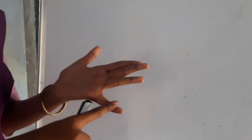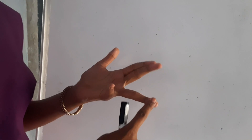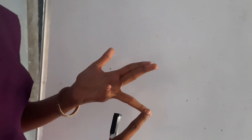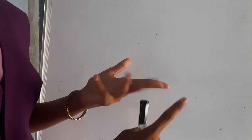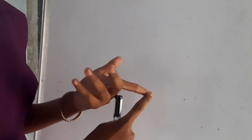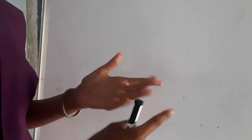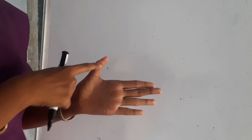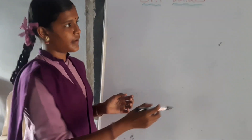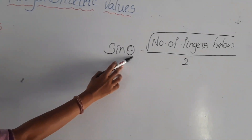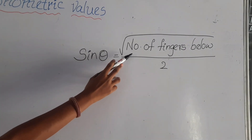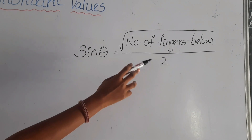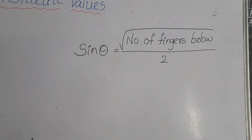Once again: little finger has 0 degrees, ring finger has 30 degrees, middle finger has 45 degrees, index finger has 60 degrees, and thumb has 90 degrees. For this we have to learn a simple formula: sin θ is equals to the square root of the number of fingers below, divided by 2.